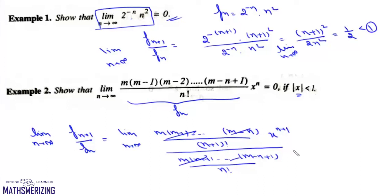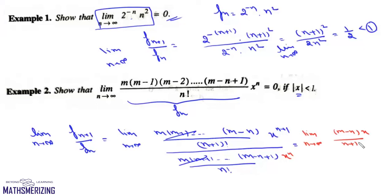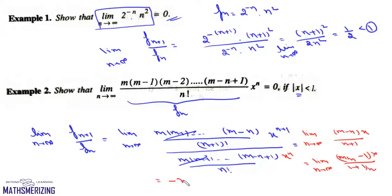So what we get is the limit n tends to infinite of (m-n) into x to the power n into x upon (n+1). Dividing numerator and denominator by n, we can write this as limit n tends to infinite of (m/n - 1) into x upon (1 + 1/n), which is nothing but minus x.